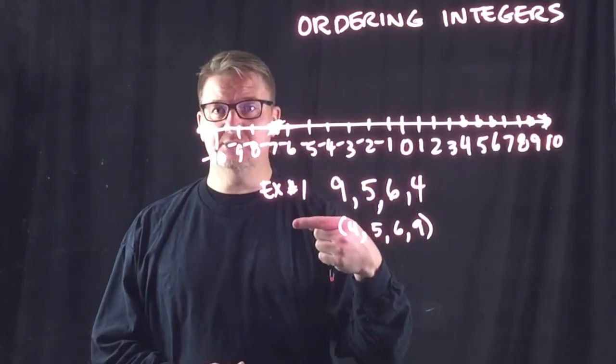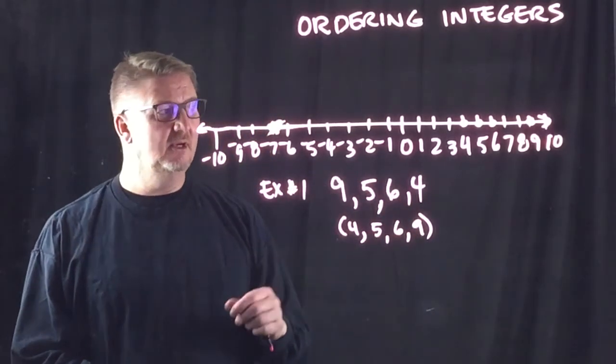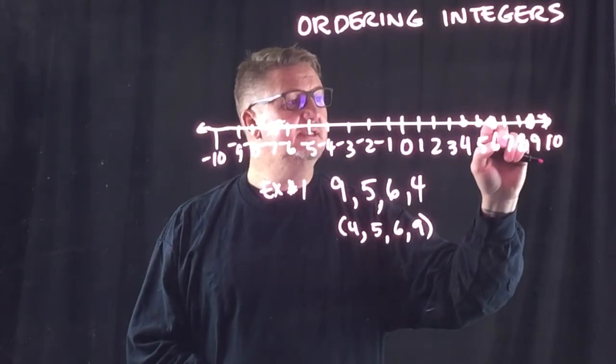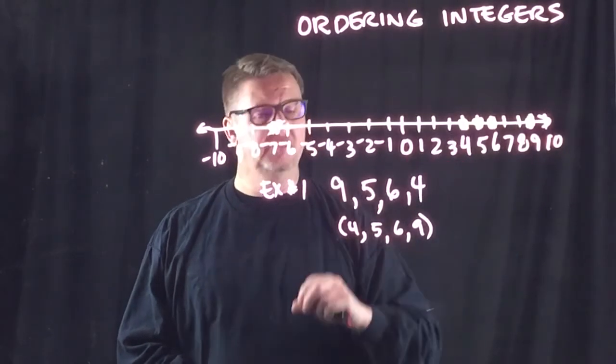And I would just do the reverse if I'm going from greatest to least. Let's look at the next set of numbers. I'm going to kind of erase these. This may get a little confusing.